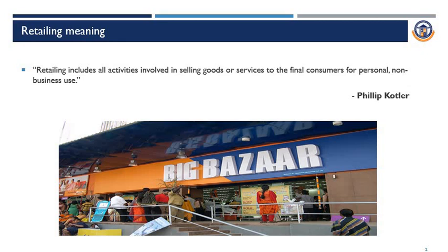We will see the meaning of Retailing. Retailing includes all activities involved in selling goods or services to the final consumer for personal non-business use. It is given by Philip Kotler. Retailing involves all the activities and the process that takes place from the production of goods to the selling of goods, reaching the final consumer through retailing.